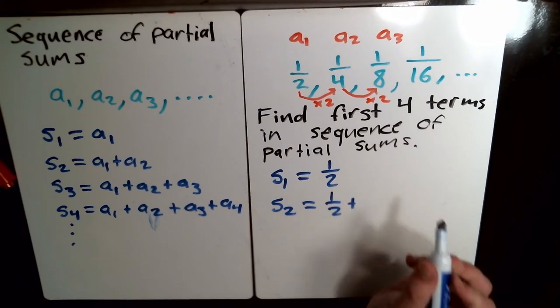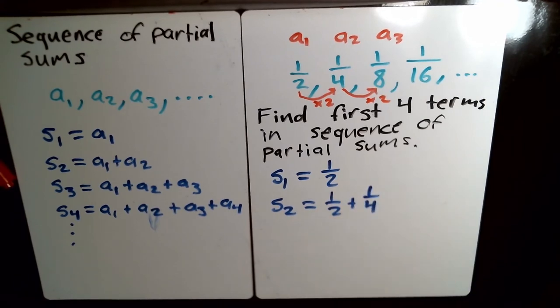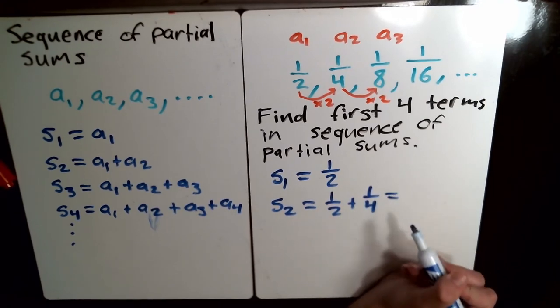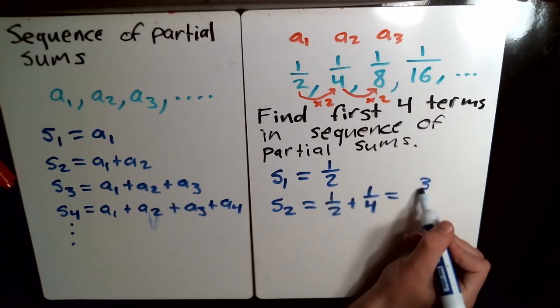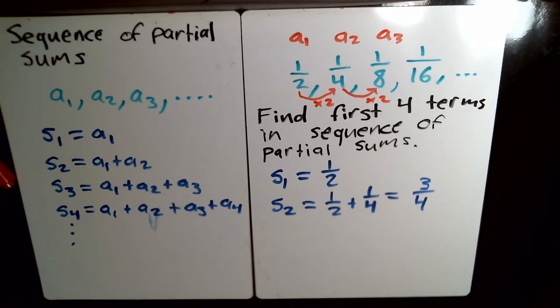S2 would be the sum of the first two terms. So, one half plus one fourth. Or, in other words, this would be two fourths, so three fourths. Let me add those two together.